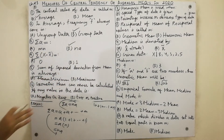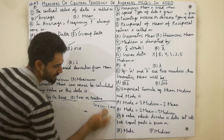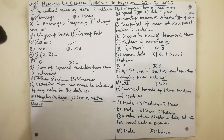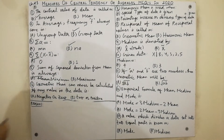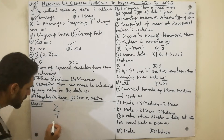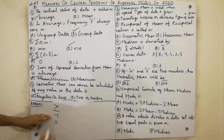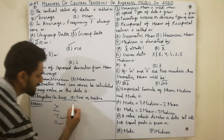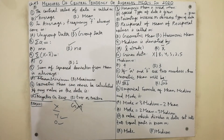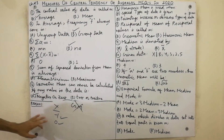The sixth MCQ: geometric mean can never be calculated if any value in the data is negative or zero. For example, if the data contains −1 or 0, we cannot find the geometric mean. Key point: geometric mean can never be calculated if any value is negative or zero.